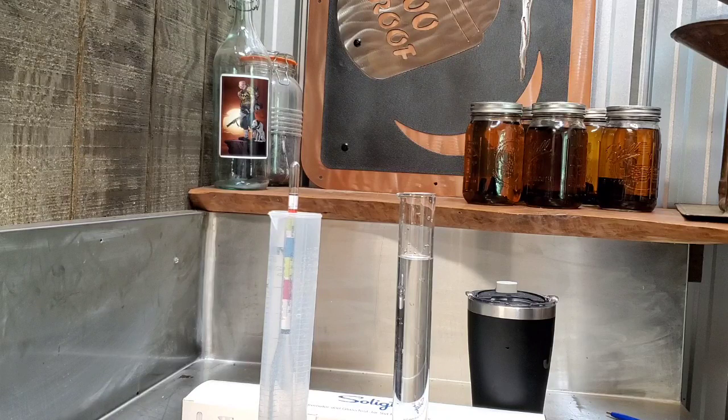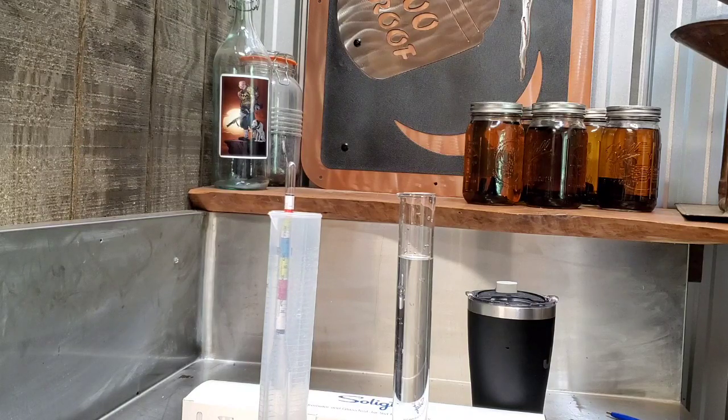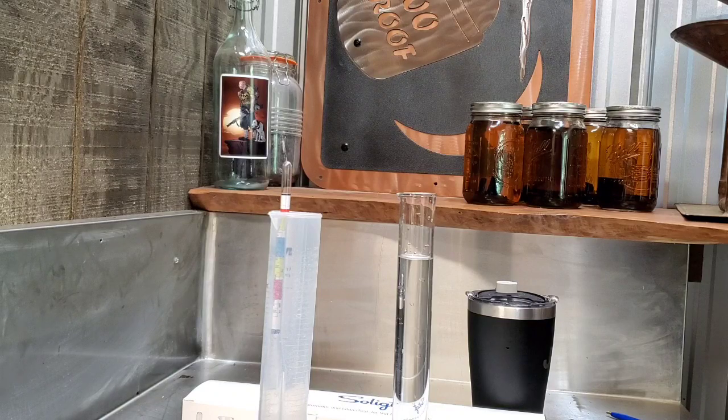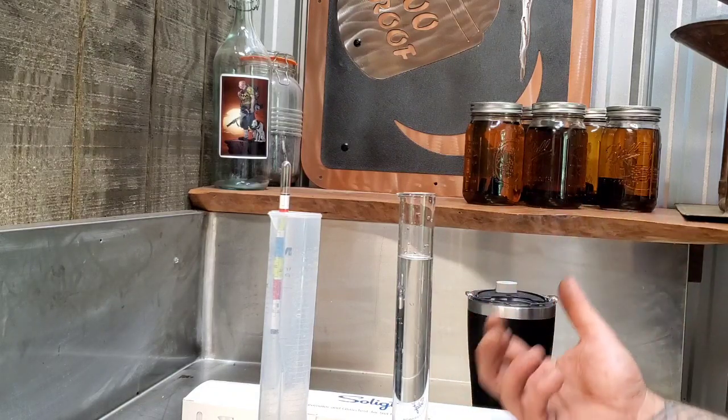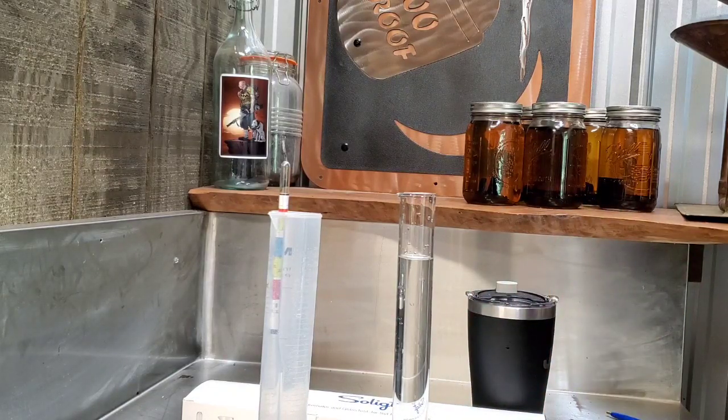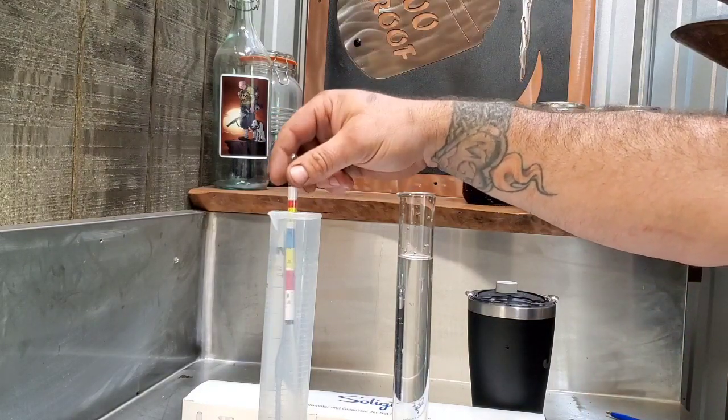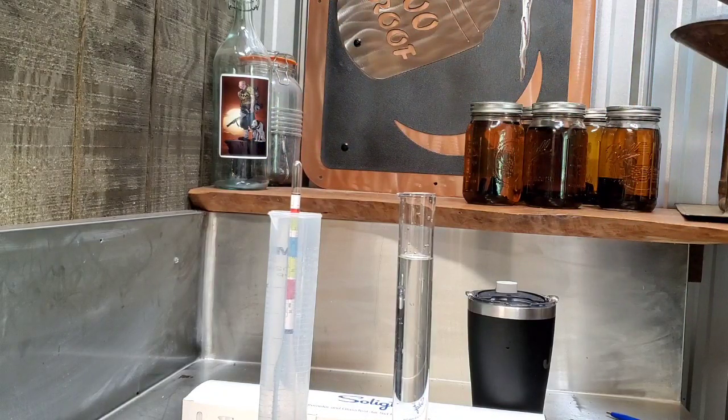I don't know if I can simplify it much more than that. The only other caveat I have to add to this is especially when you're first making your mash and trying to see how much alcohol you have, this hydrometer is calibrated at 60 degrees Fahrenheit.